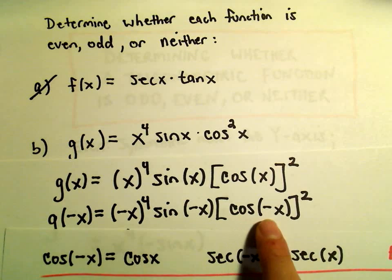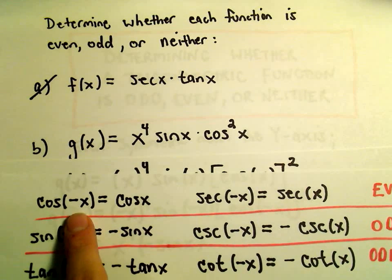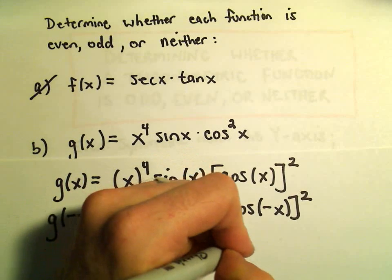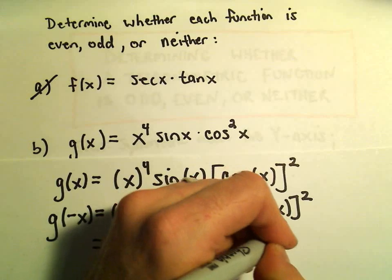Cosine of negative x, we said cosine of negative x is even, so that's just going to equal cosine x. So this is just cosine x squared.